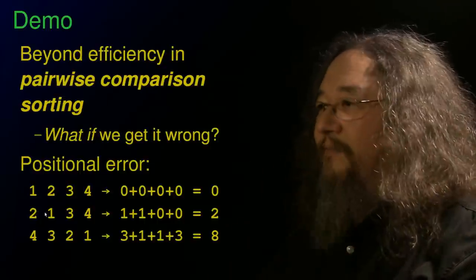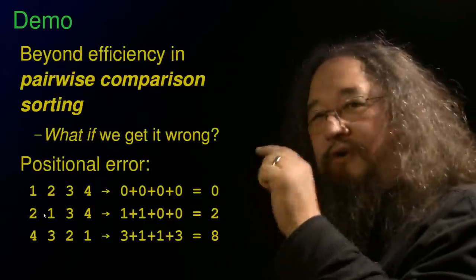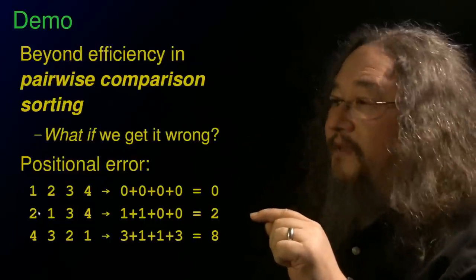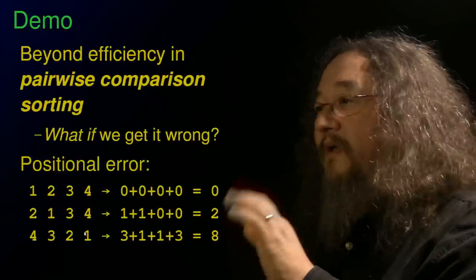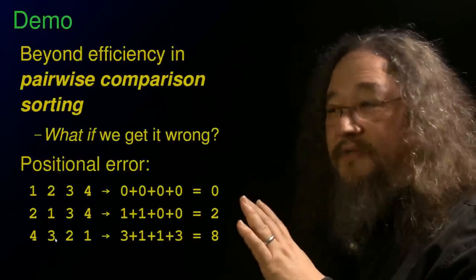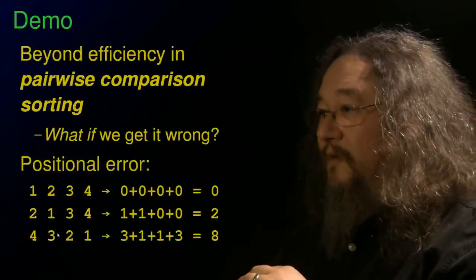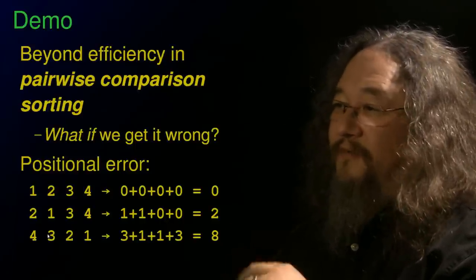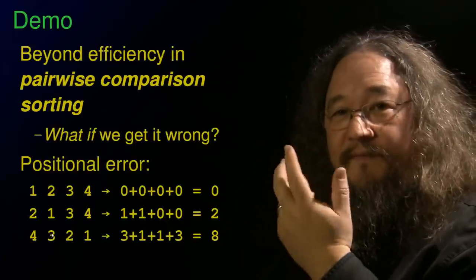Here, two and one have been swapped. So two is one position off, it wants to be here. One is also one position off, it wants to be there. The others are fine, and so on. If we get them exactly backwards, that's one of the cases where it's the worst possible positional error. The four wants to go one, two, three spots. The one wants to go one, two, three spots. The two and three want to reverse.